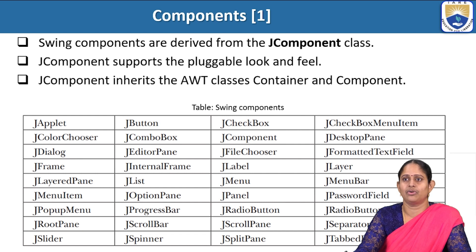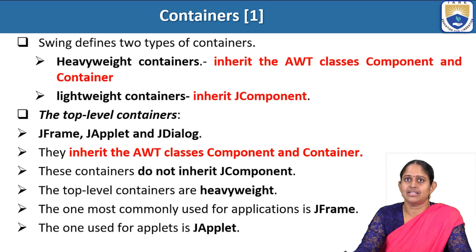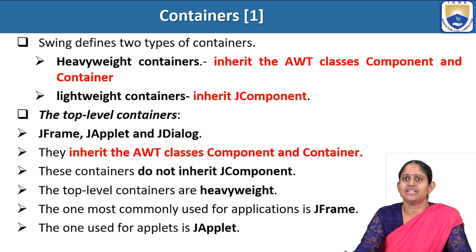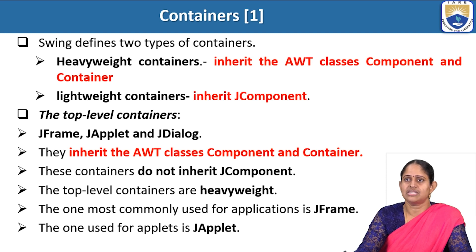There are various Swing components available inside the javax.swing package. There are two types of containers inside Swing: the heavyweight container and the lightweight container. The heavyweight container inherits the AWT Component and Container classes, whereas the lightweight container inherits the JComponent class. The top-level heavyweight containers are JFrame, JApplet, and JDialog. They inherit the AWT classes Component and Container, and do not inherit JComponent. The most commonly used top-level application container is JFrame and the one used for applets is JApplet.